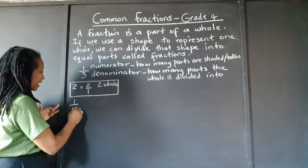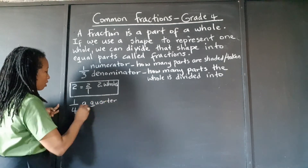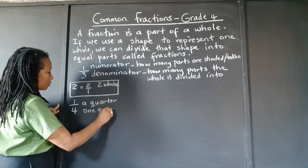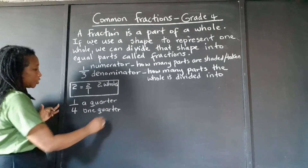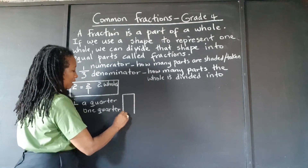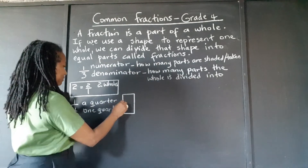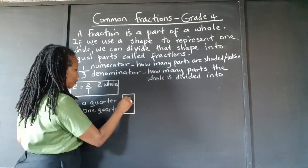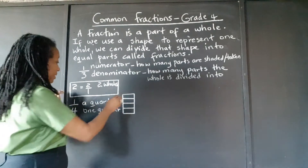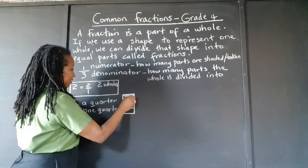This fraction is called a quarter, or one quarter. Some people prefer to say one quarter. That means we have a whole thing and we're going to cut it up into four equal parts. And we're going to remove or shade one of the parts. That's what we mean by one quarter or a quarter.